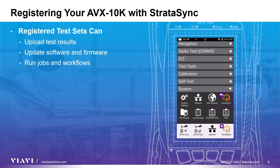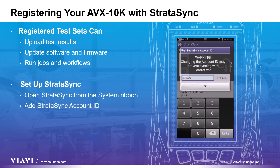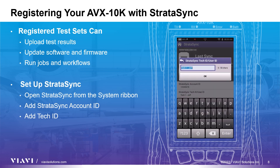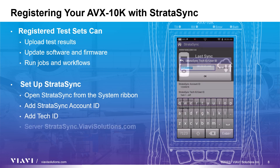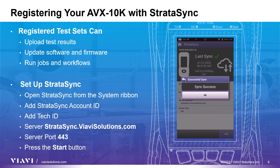Now that your account has been set up and you are a registered user, it is time to add your AVX10K to the Stratasync system. Turn on your AVX10K and open the system ribbon and click on the Stratasync application. Enter the Stratasync account number provided in your original account registration email. This can also be found next to your name on the Stratasync website. Next, enter a Stratasync tech ID/user ID. The server address should be stratosync.viavisolutions.com and the server port field should be set to 443. Once all the sync fields have been filled out and the test set is connected to the internet via Wi-Fi or Ethernet, press the Start button to initiate the synchronization process. When the process is complete, you'll get a sync success message and the test set will confirm the time and date.